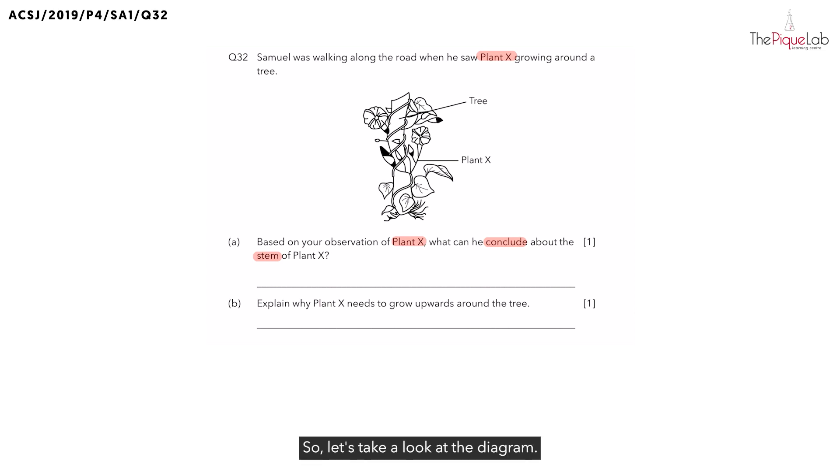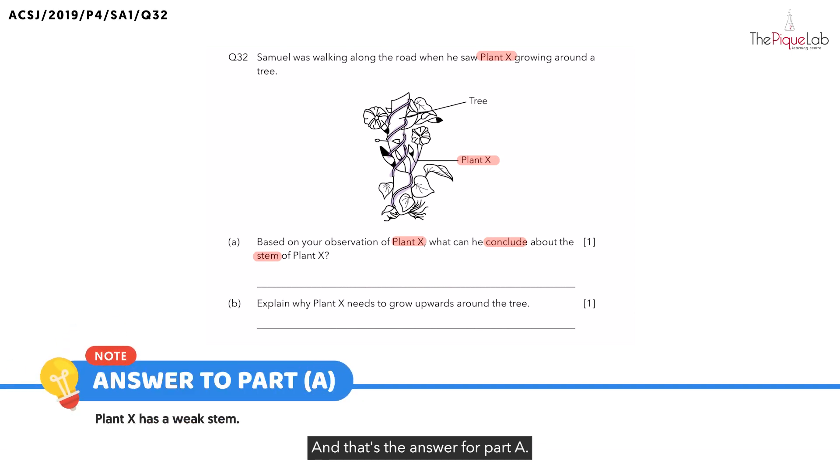So, let's take a look at the diagram. We know that plant X is this part of the plant. And you can see that the stems of this plant is actually growing around the tree for support. And how come the stem has to grow around a tree for support? This means that the stem of plant X must be weak. And that's the answer for part A. We can write down that plant X has a weak stem.